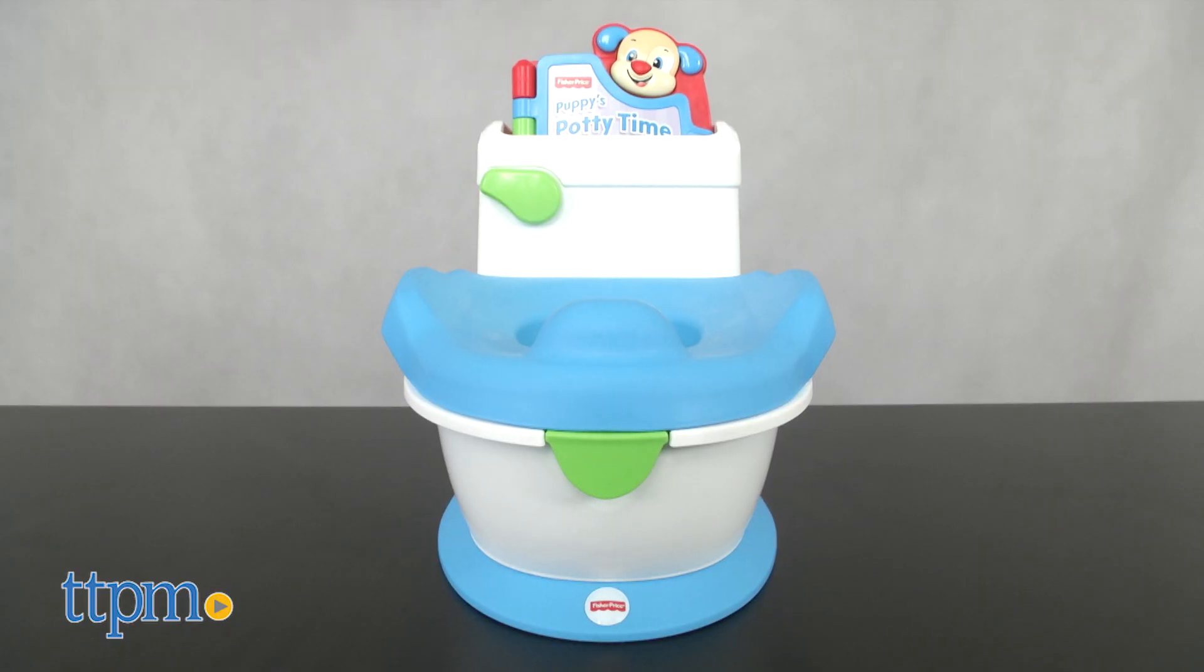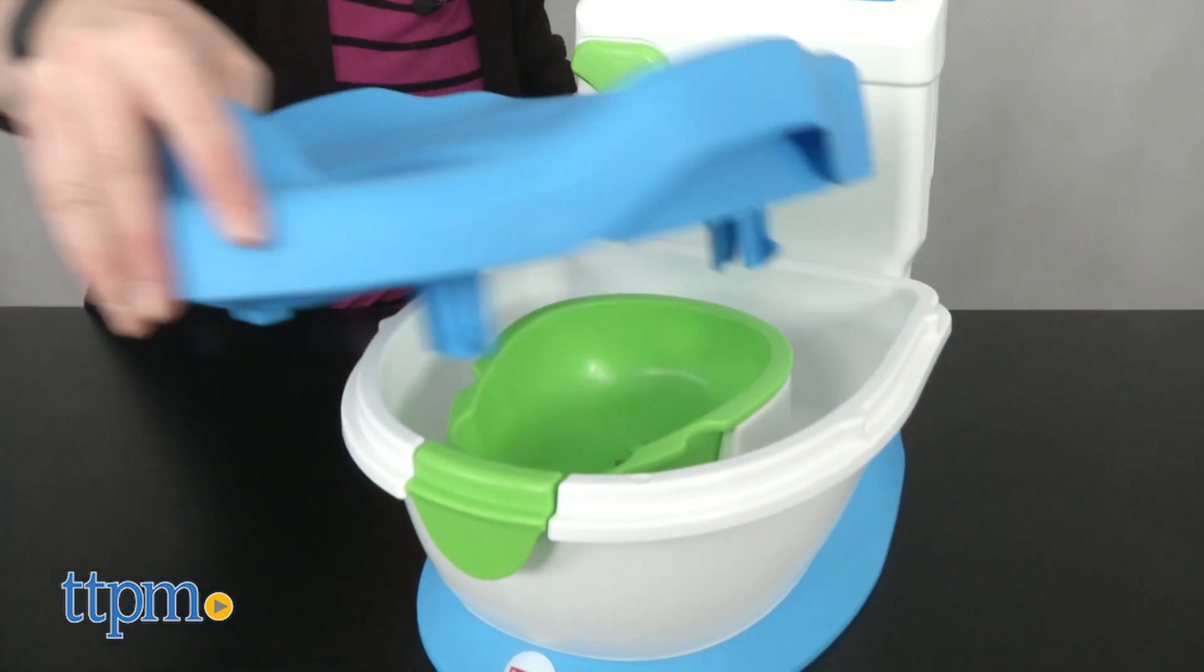The potty requires two AA batteries, and those are not included. Adult assembly is required, but is easy to do.